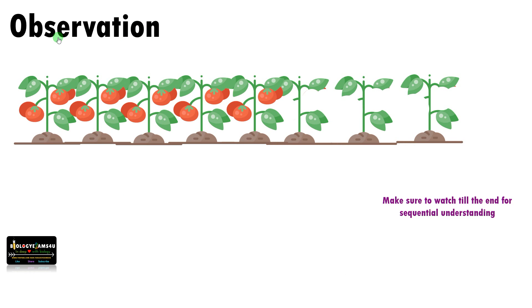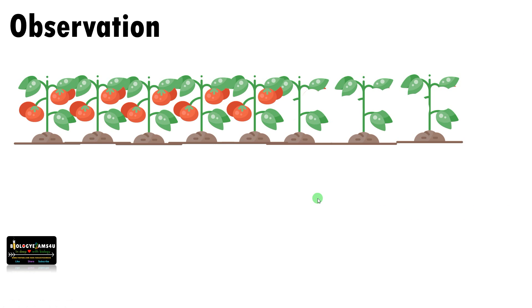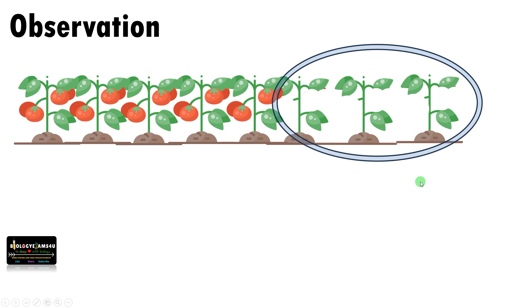A scientific method starts with observation. I was walking through my vegetable garden and found out that some of the tomato plants are very healthy with many fruits. On the other side, some of the plants are not healthy, with fewer fruits. A closer look of the phenomenon is called observation. It should be correct and it should be repeatable.